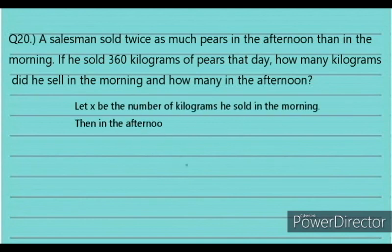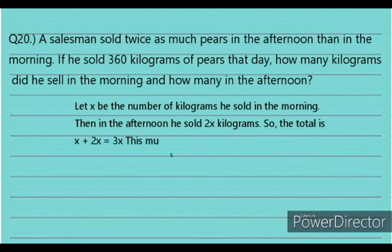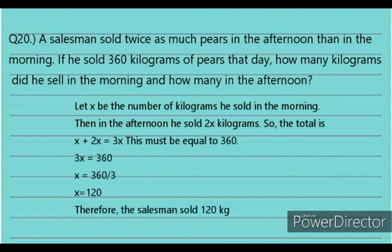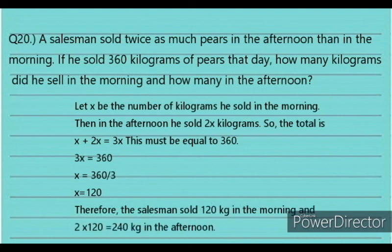Solution: Let X be the kg sold in the morning. In the afternoon he sold 2X. Total: X plus 2X equals 3X equals 360. So X equals 360 divided by 3, giving X equals 120. Therefore the salesman sold 120 kg in the morning and 2 times 120 equals 240 kg in the afternoon. The answer is letter B.